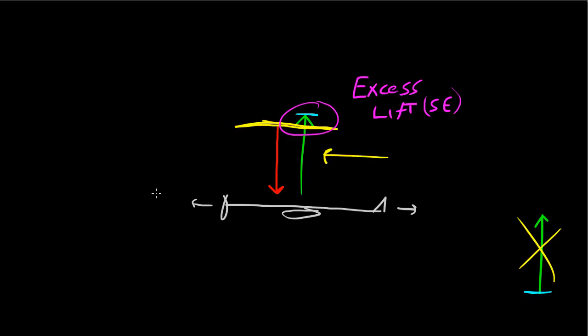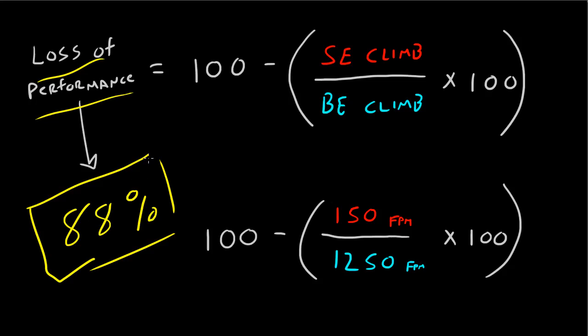So that's why when you lose one engine, you lose more than 50% of your lift capacity. In fact, you lose in the PA-44 about 88%. That's all. See ya.